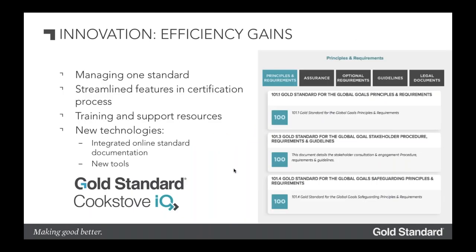Sustainable urban development or cities has been around within Gold Standard for a little while but has finally found its home in GS for GG, generating more interest than perhaps people realized. Among all the excitement of new services, we've also been cognizant that Gold Standard has a duty to improve efficiency. Managing one standard is a massive step forward — as Chief Technical Officer, I can innovate on efficiency and have it applied to everybody rather than having to apply it separately across forestry, energy, cities, and water. We can really apply the 80/20 rule now.